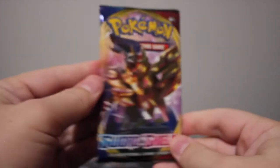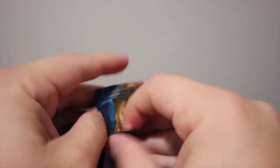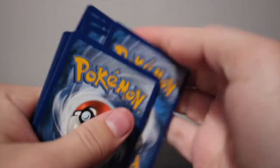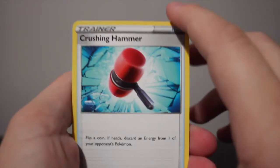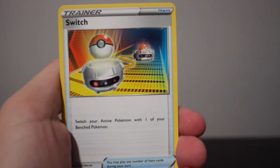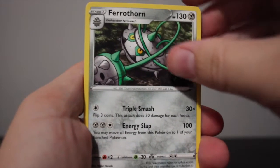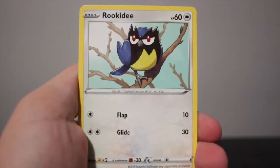Alrighty, we're jumping into pack number 4, looking for something good. This pack feels kind of cold, maybe that is good luck. A Crushing Hammer, a Nintendo Switch, Ferroseed, Chewtle, Rhyhorn, Rookidee.